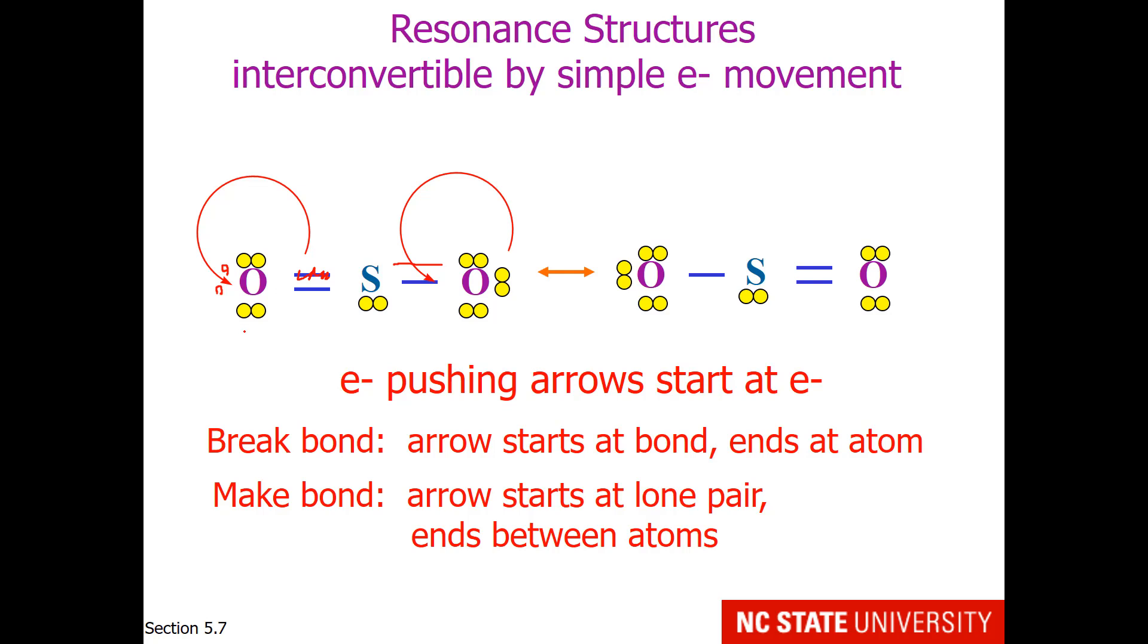So I hope you notice that now the structure on the left is the structure on the right. Let us say I wanted to turn the structure on the right into the structure on the left. Well, first I would want to kick in this lone pair to make a double bond. Next, I would want to turn this double bond into a lone pair. I hope you notice that now we have in both structures the double bond on the left side and the single bond on the right side.